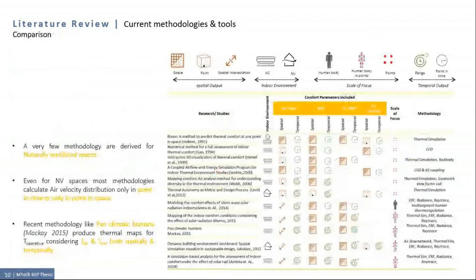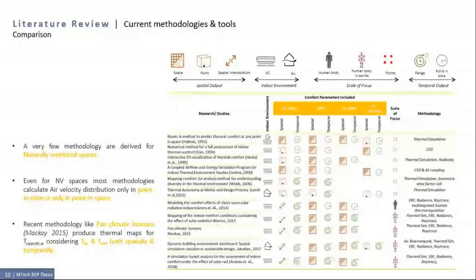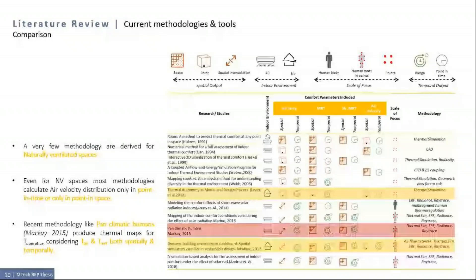Further, all the recent studies were analyzed from four points: analysis method, scale of focus, spatial output and temporal output. Most of the methodologies have been derived for air-conditioned spaces and majorly cover only two parameters of the study. Two studies, one by Levitt and other by Jackie Witt, intend to capture thermal diversity from naturally ventilated spaces. But both of them are for single spaces using ISO network models to predict the impact of air velocity. Hence, calculating air velocity distribution only in point in time or point in space and not both together. Recently, methodologies like Panclimate Humans by Mackey 2015 produces thermal maps for operative temperature considering air temperature and mean radiant temperature both spatially and temporally and has been packaged in the form of an open source tool as well.